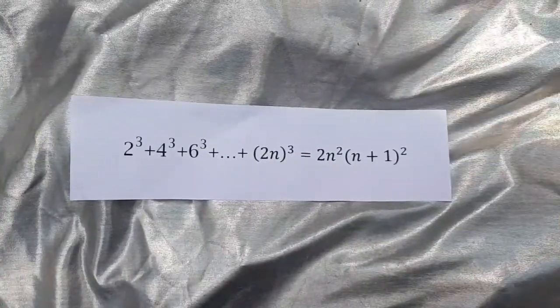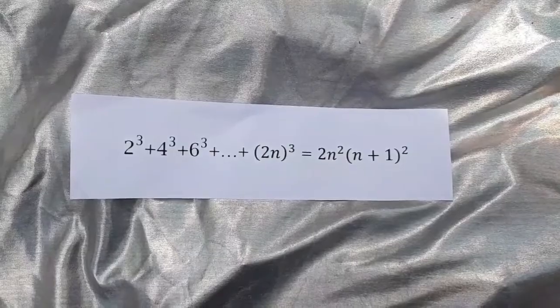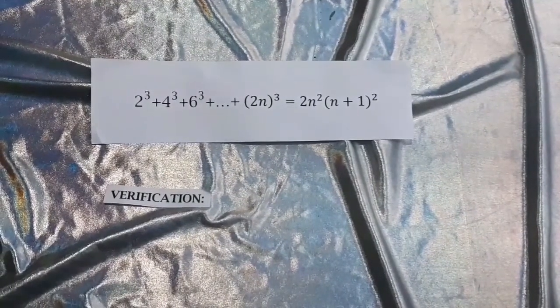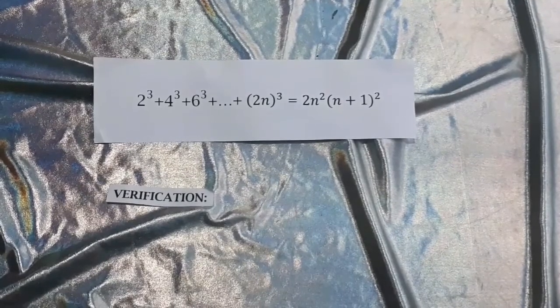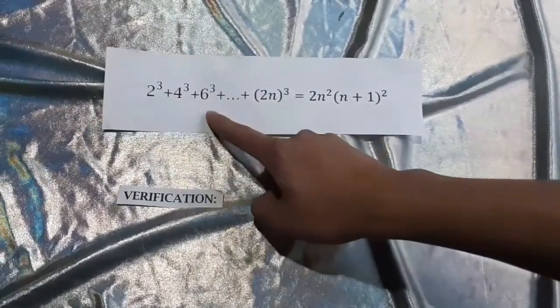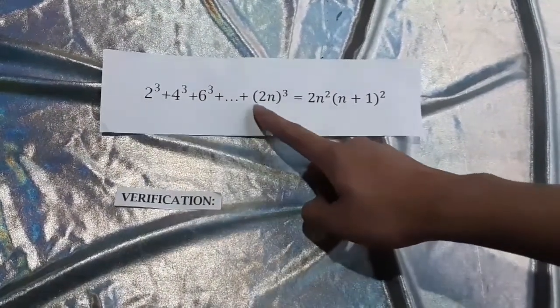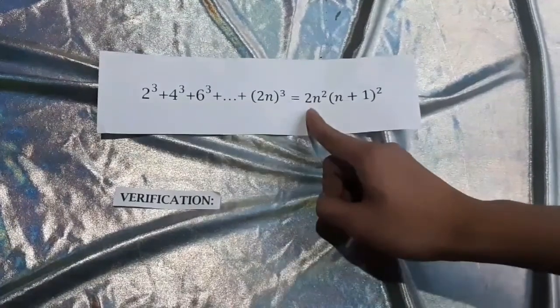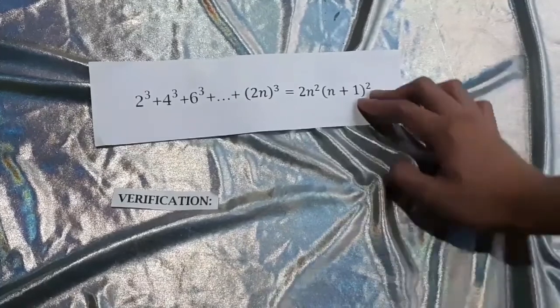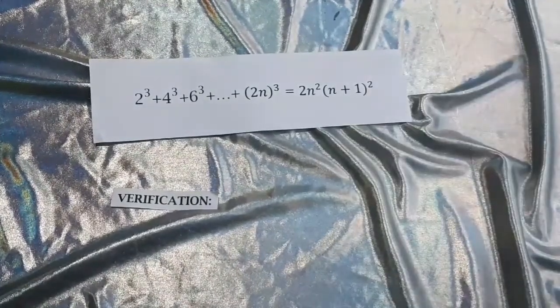We'll prove this using Mathematical Induction. For our example, we need to prove that 2³ + 4³ + 6³ + ... + (2n)³ = 2n²(n + 1)². For our first step, it's called verification.